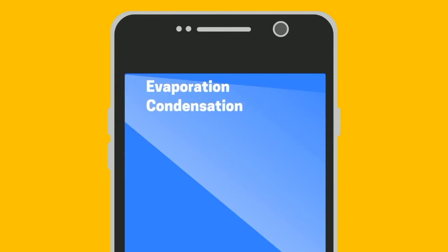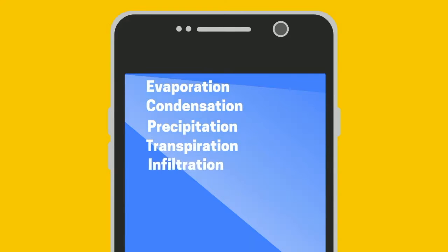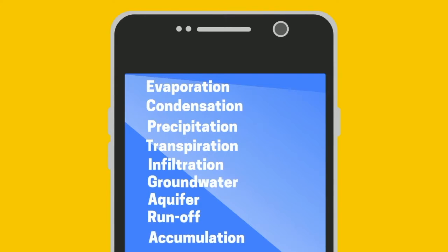The nine steps are: evaporation, condensation, precipitation, transpiration, infiltration, groundwater, aquifer, runoff, and accumulation.